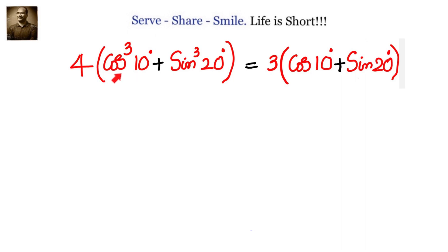Now immediately we have to remember which identity has cubes. So we know that sin 3 theta equals 3 sin theta minus 4 sin cube theta. You can see we have cubes there. Similarly, cos 3 theta equals 4 cos cube theta minus 3 cos theta.